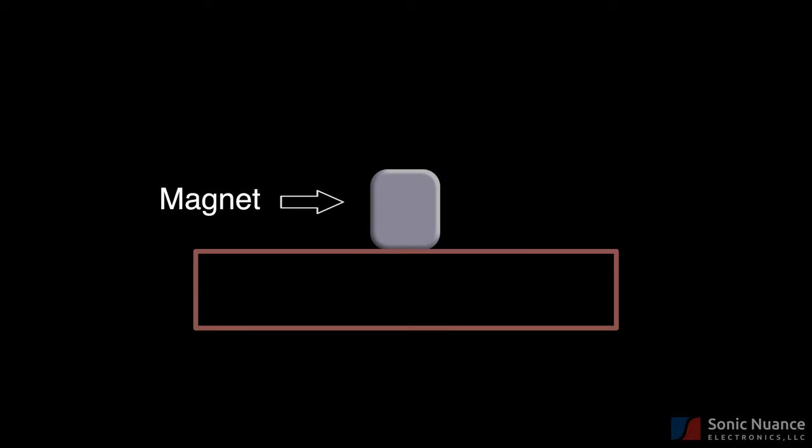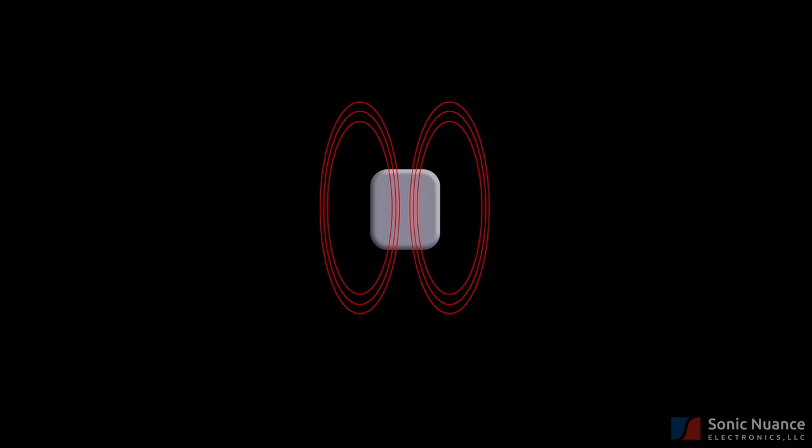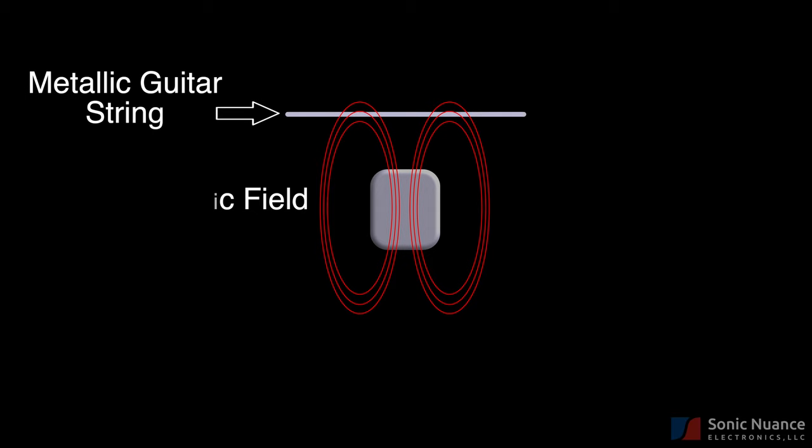On top of this body, let's add a permanent magnet, represented here in this silver-ish colored rectangle. Let's remove the guitar body, and show the magnetic field lines around this permanent magnet, and also show the guitar string above it.